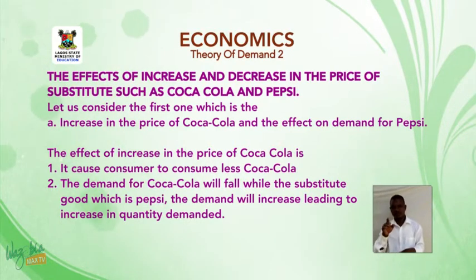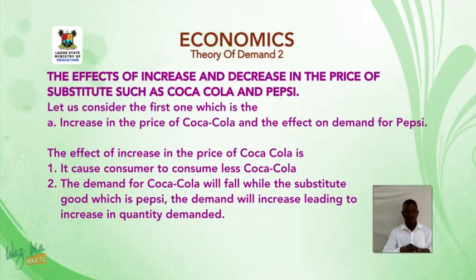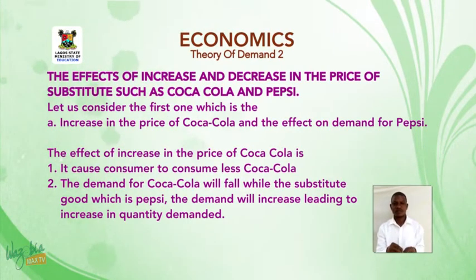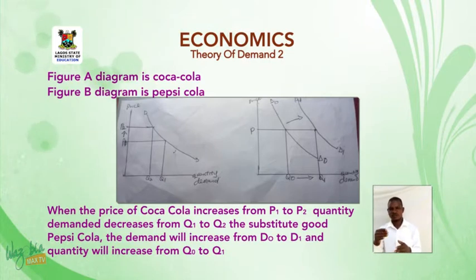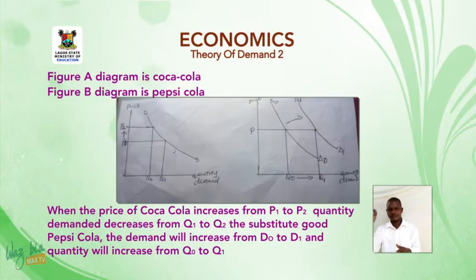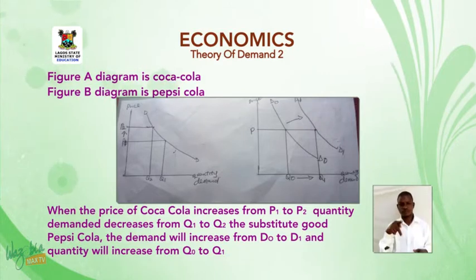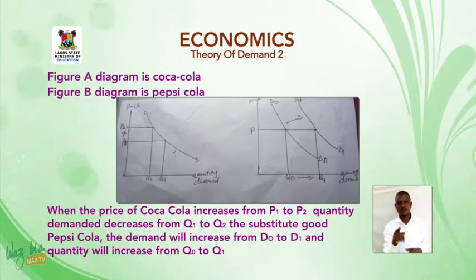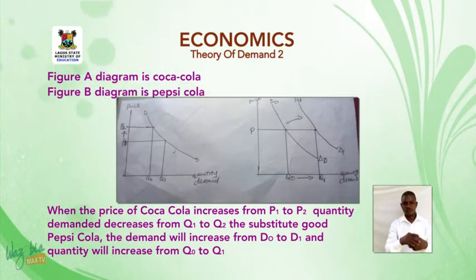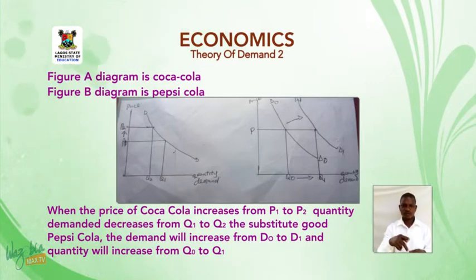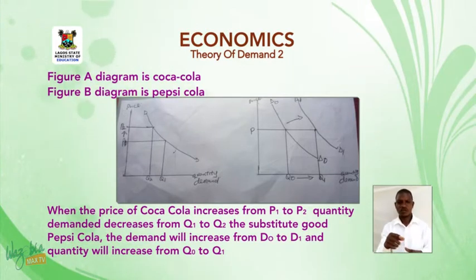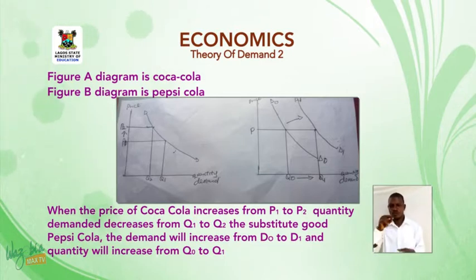While the substitute good, Pepsi-Cola, will see its demand increase, leading to an increase in quantity demanded. This can be illustrated in the diagram below. In diagram A (Coca-Cola), when the price of Coca-Cola increases from P1 to P2, quantity demanded decreases from Q1 to Q2. In diagram B (Pepsi-Cola), the demand will increase from D0 to D1, and the quantity will increase from Q0 to Q1.